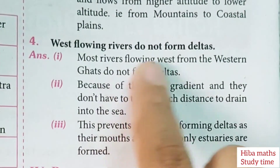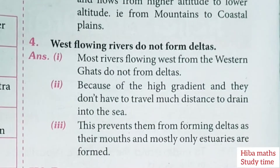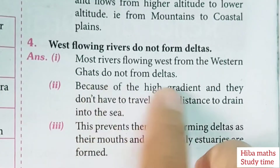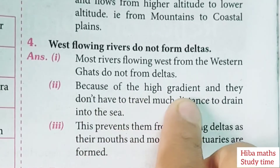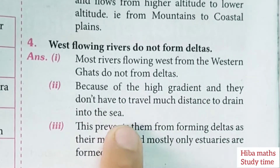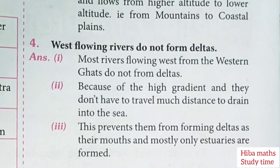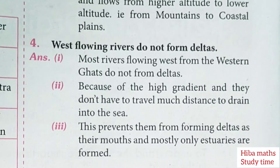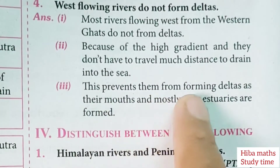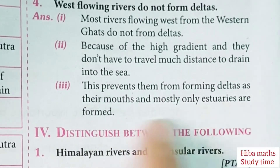The west flowing rivers do not form deltas. Most rivers flowing from the Western Ghats do not form deltas because of high gradient, and they don't have to travel much distance to drain into the sea. This prevents them from forming deltas, and mostly only estuaries are formed at their mouths.